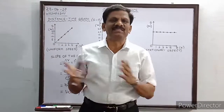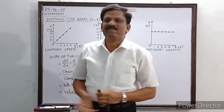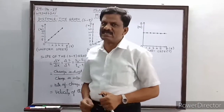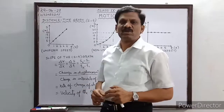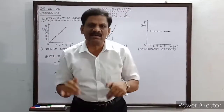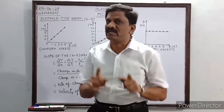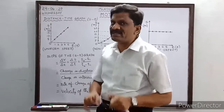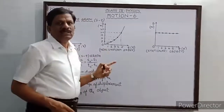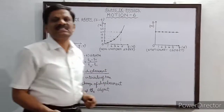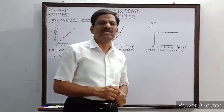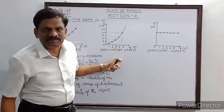What is the difference between the first and second cases? In the first case, for every 1 second, 5 meters distance is covered — equal distances in equal time intervals — so the body has uniform speed. In the second case, the body covers unequal distances in equal time intervals, and hence the speed of the body is non-uniform.